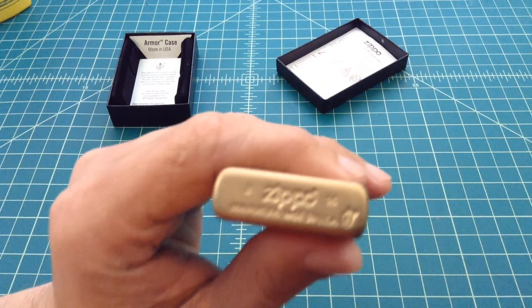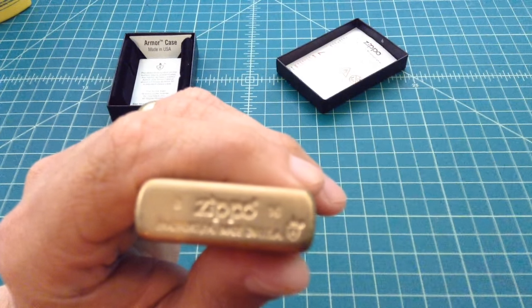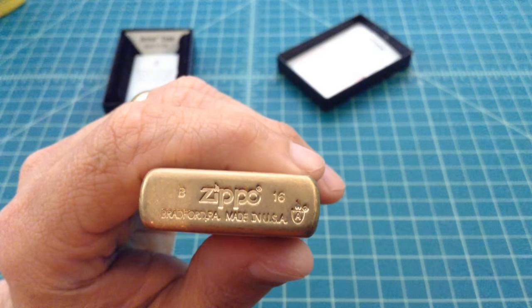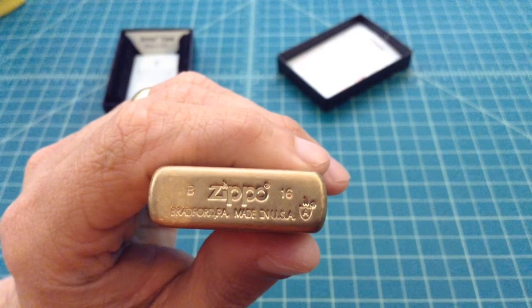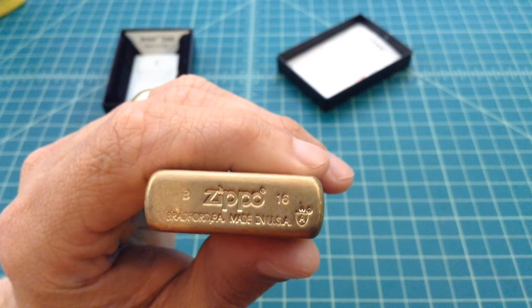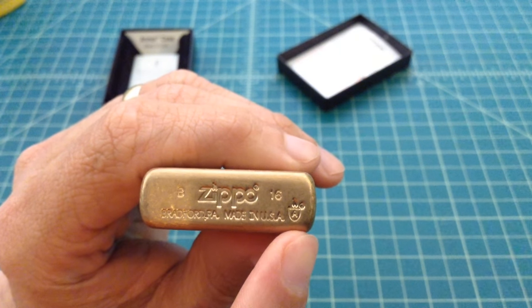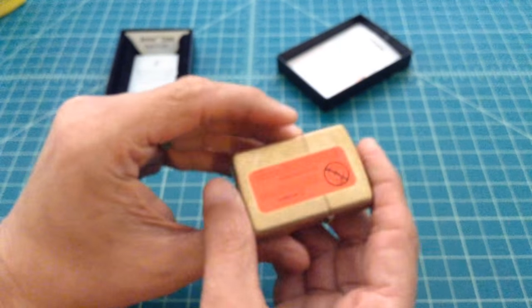So we take a look at it here, you can see the bottom of it. It's marked Zippo and it has a B16, which is February 2016 when it was made. And then it says Bradford, so it looks like Bradford, PA, made in the USA. And then here is the symbol for any of the armor style Zippos.